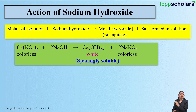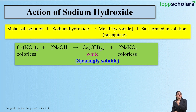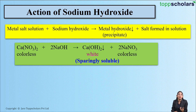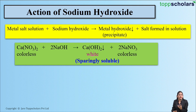Let's take an example. Here I have calcium nitrate solution, which is a metallic salt solution — calcium nitrate solution is colorless. When we add drops of sodium hydroxide solution into this colorless calcium nitrate solution, it results in the formation of a white precipitate of calcium hydroxide, along with the formation of sodium nitrate which is colorless. This white precipitate of calcium hydroxide is sparingly soluble — that is, partially soluble — in excess of sodium hydroxide solution.